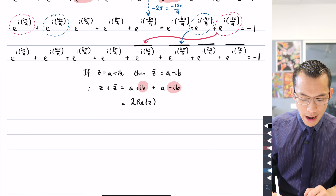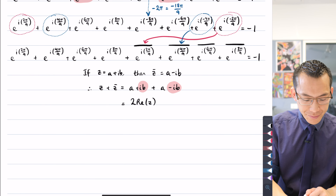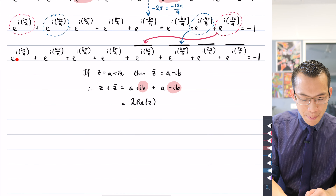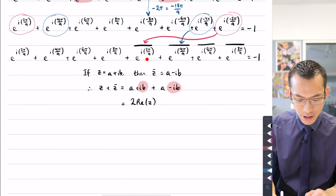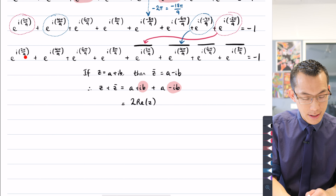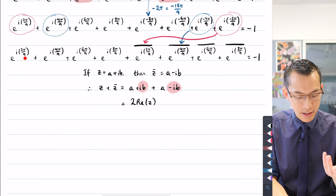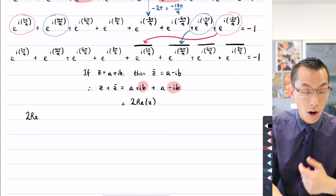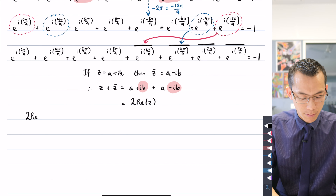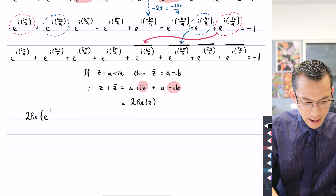So therefore I can say, up here, when I pair this complex number with its conjugate, this equals 2 times the real component of that complex number, e to the i, 2π on 9.